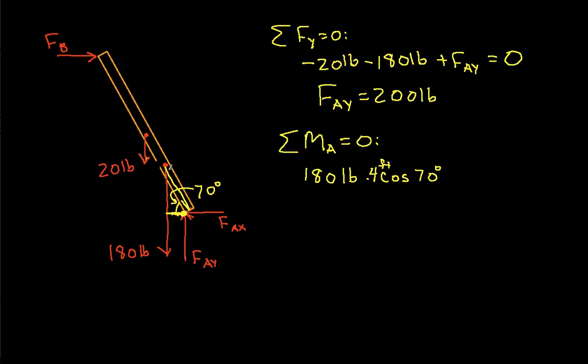This is going about A counterclockwise, so this would be positive. So we have then plus 20 pounds. That's got a moment arm of 6 feet times the cosine of 70 degrees. Minus F sub B, and F sub B is acting on a moment arm that is 12 feet times the sine of 70 degrees, and this is all equal to zero.